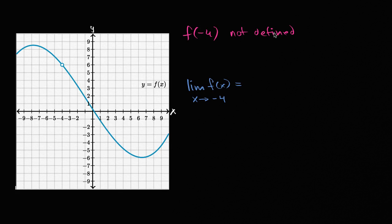And actually, it could go the other way around. Sometimes a function is defined there, but the limit is not. And we'll see that in future videos. But let's just get an understanding here. What's going on as x approaches negative four? From values greater than negative four, and from values less than negative four.